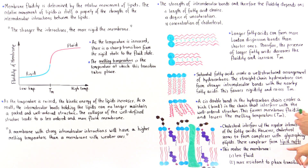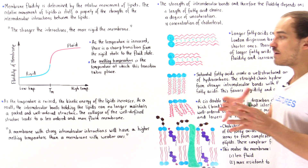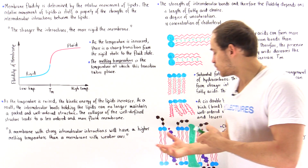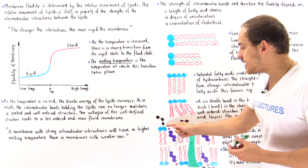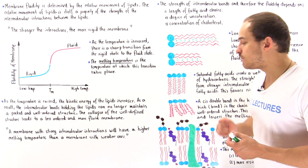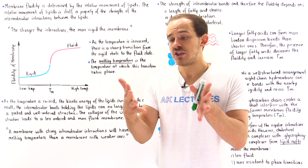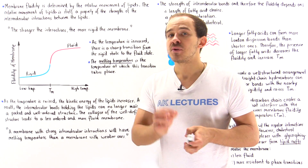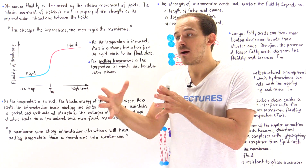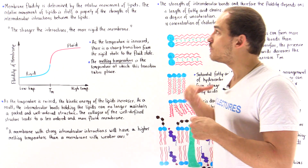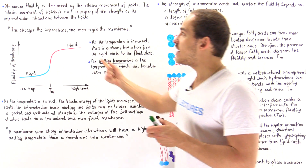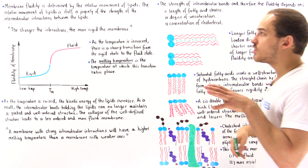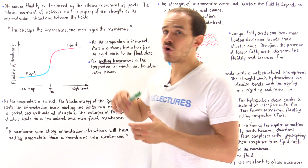In the lipid raft region, we have many more of these large molecules — cholesterol molecules and glycophospholipids are relatively large and are packed densely — so that area will have a lower amount of movement. Lower movement means more interactions, making that membrane region more rigid.